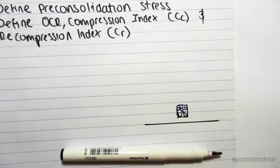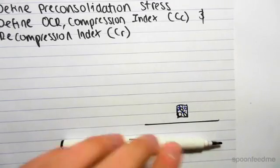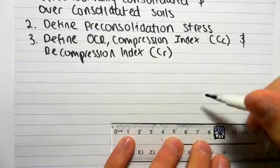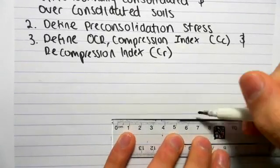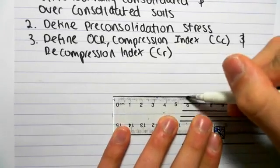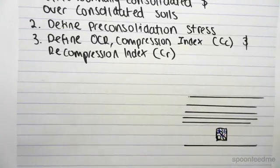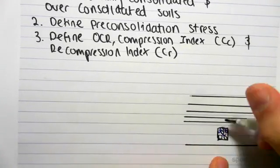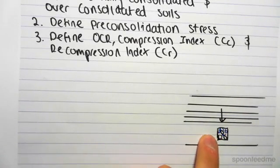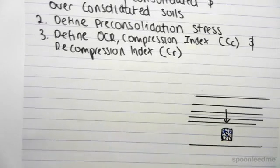So what we can see is that this soil over time, this sample of soil, will be subjected to, say, deposition. So there's going to be layers of more soil forming on top of it. This is a diagram over time. More soil forms on top of it, which means that we're getting more vertical effective stress on our soil.